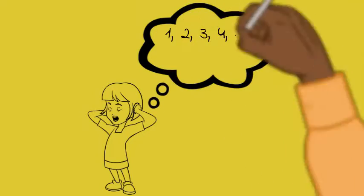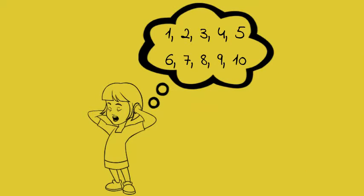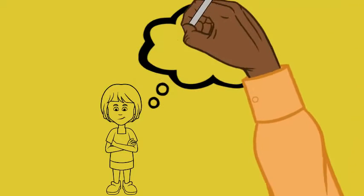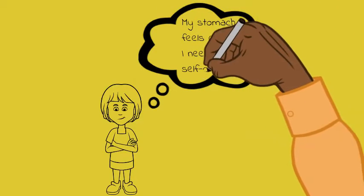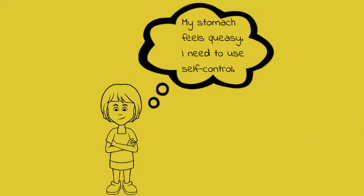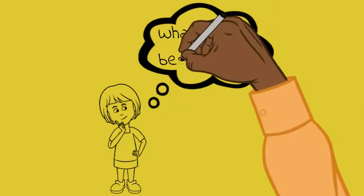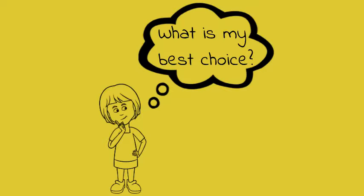She stops and counts to 10, allowing herself to cool off and think. Anne thinks of how her body feels. 'My stomach feels queasy. I need to use self-control.' Anne thinks to herself, 'What is my best choice?'